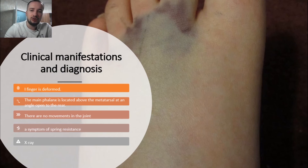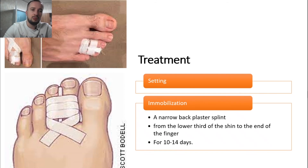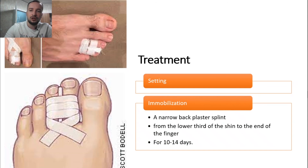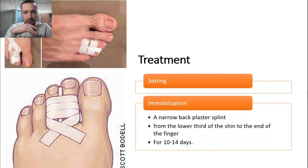X-ray examination confirms dislocation of the first metatarsophalangeal joint. The method of reduction is the same as when removing dislocation of the first finger of the hand. After manipulation, the limb is immobilized with a narrow posterior plaster splint from the lower part of the shin to the end of the finger for 10 to 14 days. Restorative treatment is prescribed subsequently and physical loading is allowed after three to four weeks.